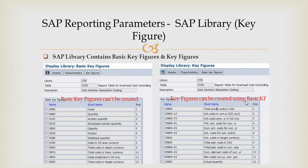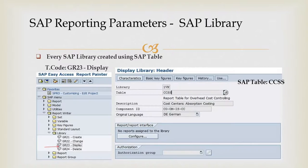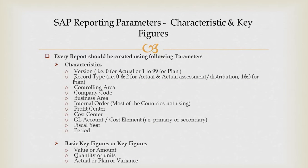For example, if you want actual data, you select while creating the key figures: the cost, the actual version, and the actual data record type. As shown in my previous video, record type 0 and 2 is for actual and assessment/distribution, while record type 1 and 3 is for plan.